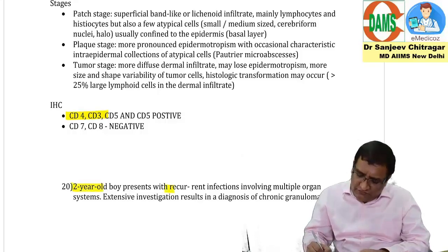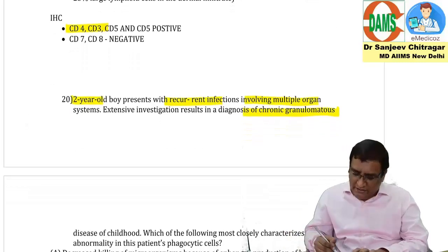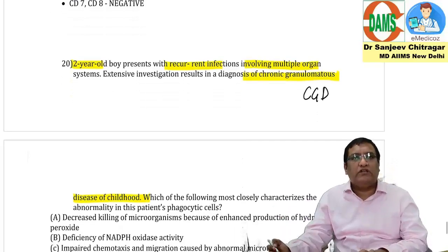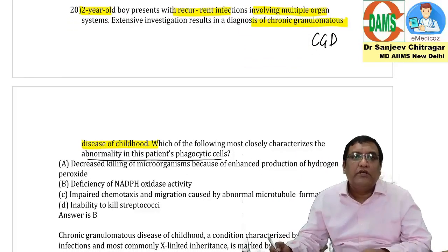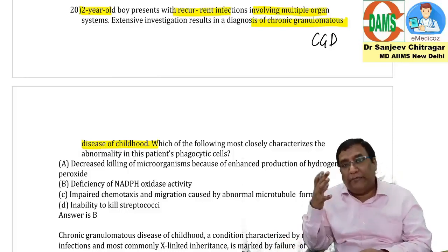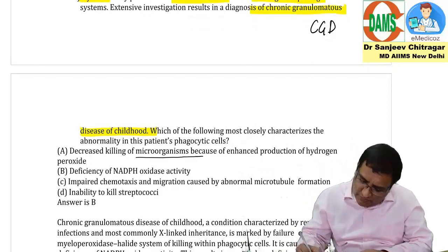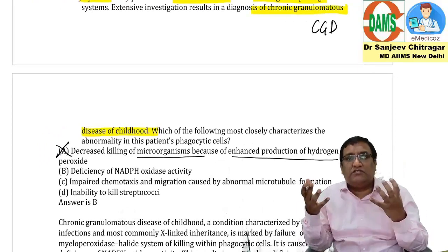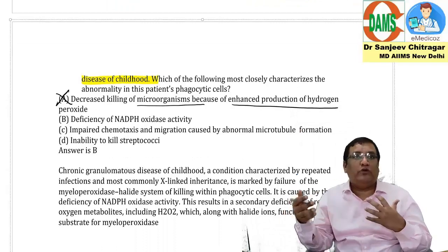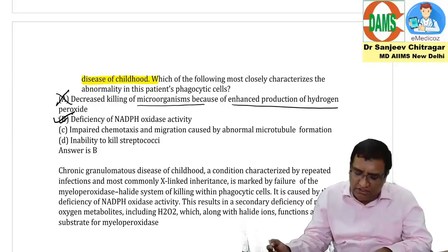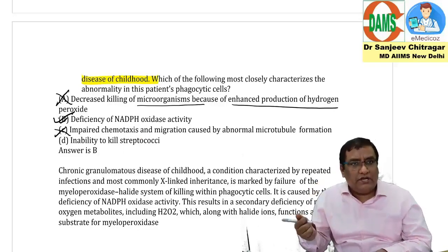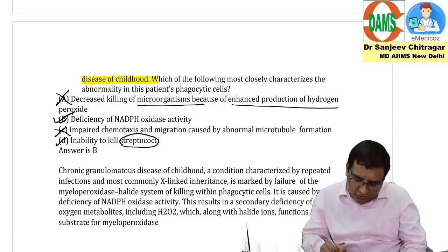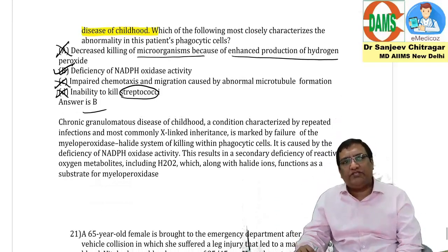A two-year-old boy presents with recurrent infections involving multiple organ systems. Extensive investigation results in diagnosis of chronic granulomatous disease (CGD). Catalase-positive organisms would typically be involved. The question asks what characterizes the abnormality in the patient's phagocytic cells. Option A — decreased killing due to enhanced hydrogen peroxide — is illogical; enhanced H2O2 should mean more killing. Option C — impaired chemotaxis — is not the answer. Option D — inability to kill streptococci — is incorrect; it should be staphylococci. The correct answer is option B: NADPH oxidase deficiency.